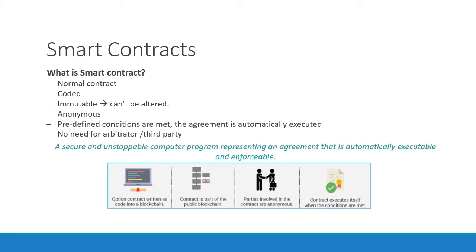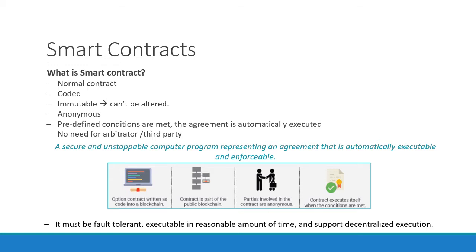In conclusion, it's a secure, unstoppable computer program representing an agreement that is automatically executable and enforceable. We should keep in mind that the code of a smart contract must be fault-tolerant, executable in a reasonable amount of time, and support decentralized execution. Any coding error may lead to drastic results.